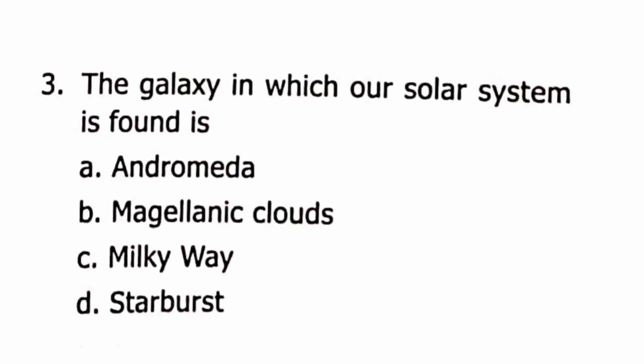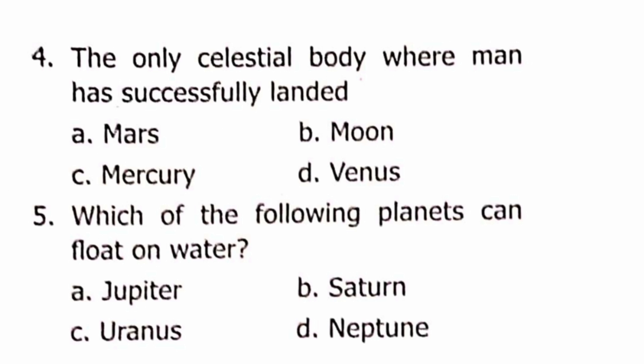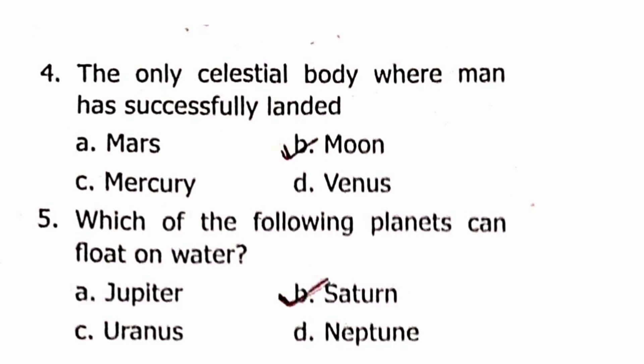Question 3: The galaxy in which the solar system is found is the Milky Way. Question 4: The only celestial body where man has successfully landed is the Moon. Question 5: The planet that can float on water is Saturn.